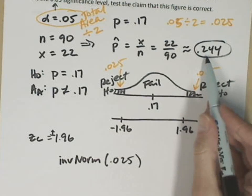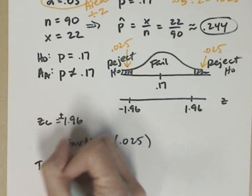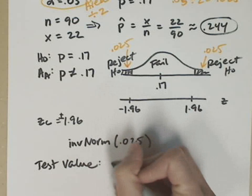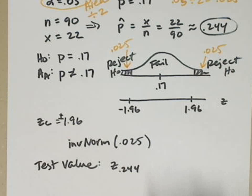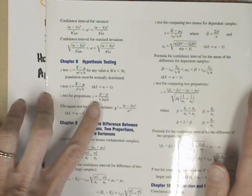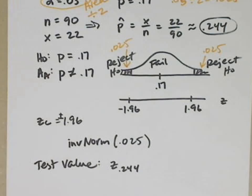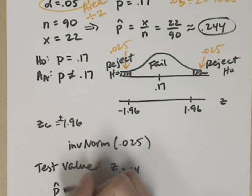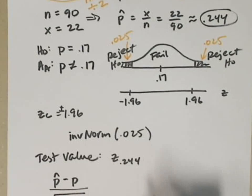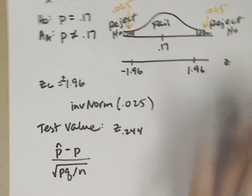What we have now are the critical z-scores that cut off the rejection region. I need to figure out the z-score for .244. That's going to be my test value. In order to do that, I need the z-score formula for chapter 8. The z-test for a proportion. I've got p-hat minus p over the square root of pq over n.